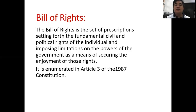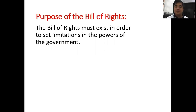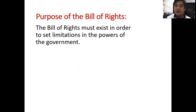This is the definition of the Bill of Rights: it is the set of prescriptions setting forth the fundamental civil and political rights. The purpose of the Bill of Rights is to set limitations to the powers of the government. Without these limitations, the government can do anything it wants to do to the detriment of the people.